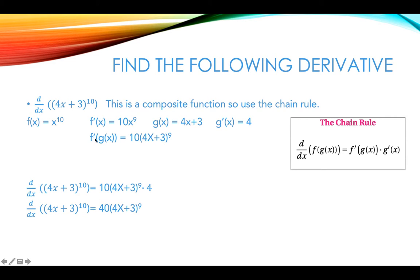Remember we need f prime of g of x, so we're going to plug in whatever the rule is for g of x as an input into f prime of x. So we're going to have 10 times (4x plus 3) to the ninth power. So our derivative is going to equal f prime of g of x times g prime of x, and so we're going to have 10 times (4x plus 3) to the ninth times 4, so 40 times (4x plus 3) to the ninth power.